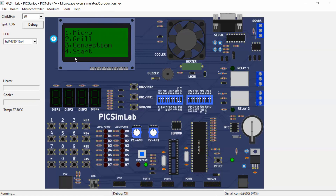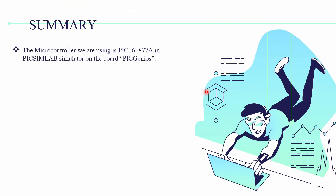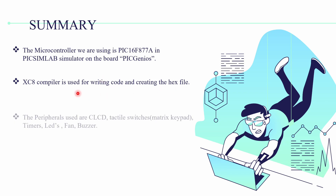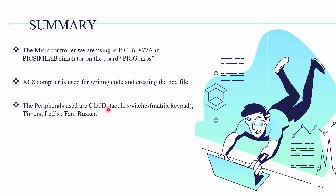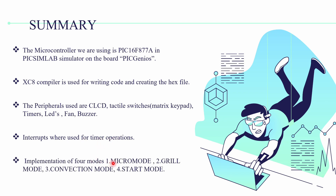We have implemented all four modes and seen what each one contains. To summarize the project: it uses the PIC16F877A microcontroller in the PIC sim lab simulator on the PIC Genius board. The XC8 compiler is used for writing code and creating the hex file, and MPLAB X IDE is also used. The peripherals used are CLCD, tactile switches, matrix keypad, timers, LEDs, fan, and buzzer. Interrupts are also used in timer operations. All four modes — Micro mode, Grill mode, Convection mode, and Start mode — have been implemented.